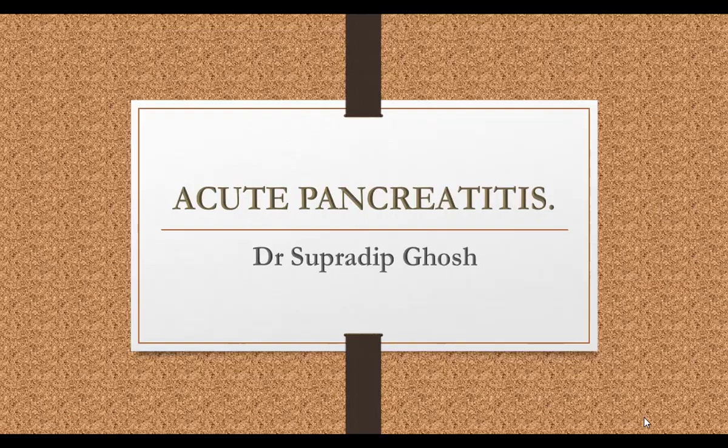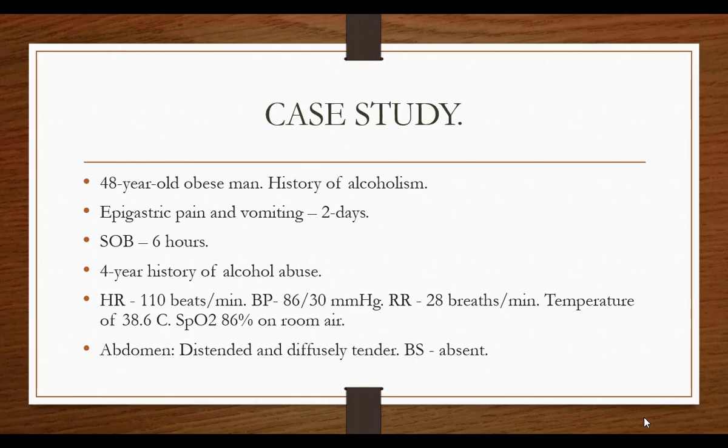Good morning. We start with a case — a typical case of acute pancreatitis. A 48-year-old obese man with history of alcoholism presented with epigastric pain and vomiting for the last two days. He was also having shortness of breath for the past six hours, with alcohol use or abuse for four years. On admission to the ER, heart rate was 110, BP was hypotensive, tachypneic, temperature 38.6°C, SpO2 86% on room air. Abdomen was distended with diffuse tenderness and bowel sounds were absent.